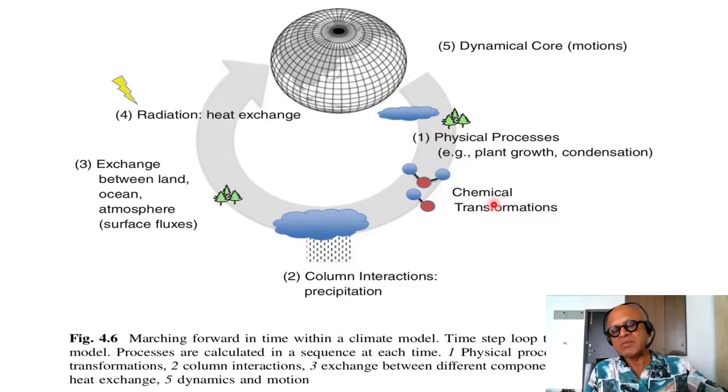Marching forward in time within the climate model. Time step loop typical of a climate model. Processes are calculated in a sequence at each time. Physical processes and chemical transformations, column interactions, exchange between different components, radiation and heat exchange, and dynamics and motion.